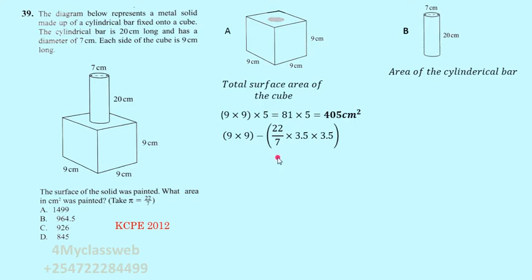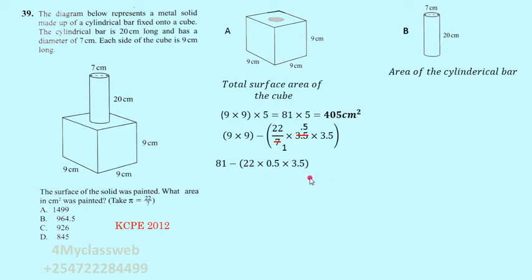To simplify the bracket: 7 divided by 7 equals 1, and 3.5 divided by 7 equals 0.5. So the bracket becomes 22 × 0.5 × 3.5 = 38.5. Therefore: 81 minus 38.5 equals 42.5 centimeters squared. This area of the top face — excluding the circular part — is what will receive paint.